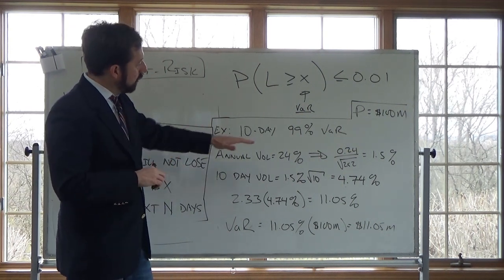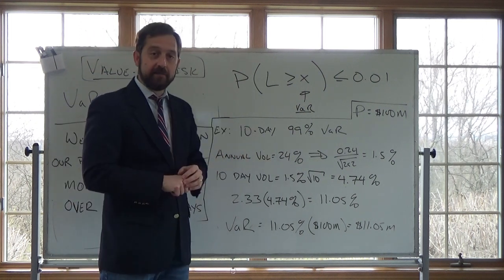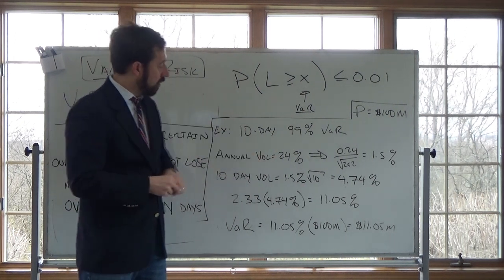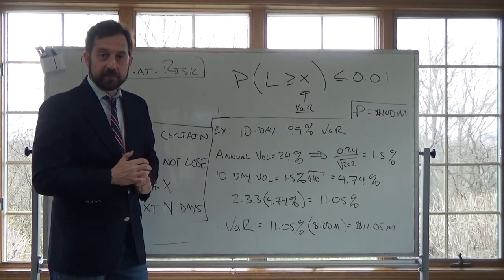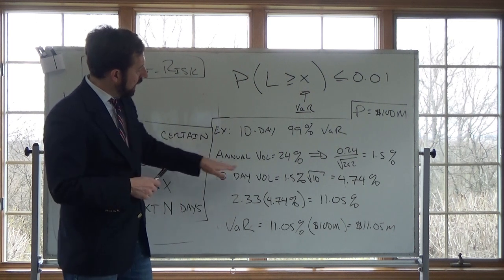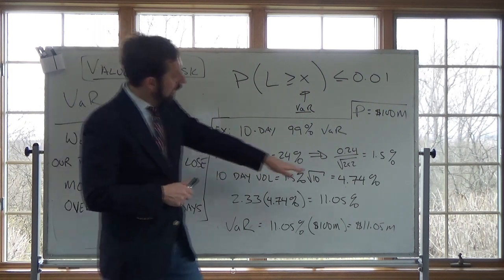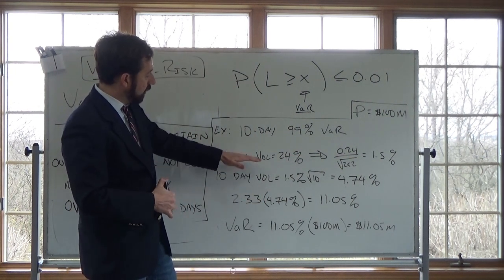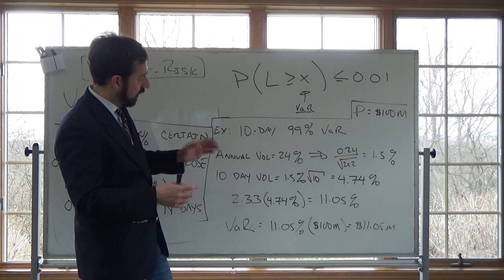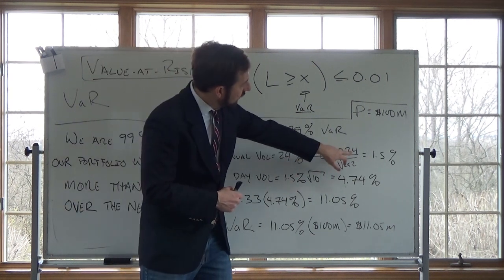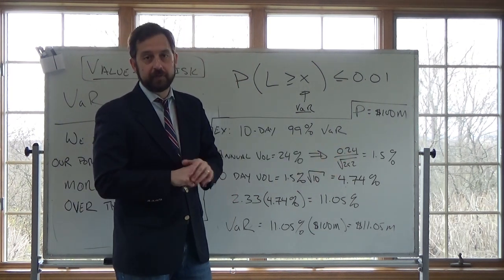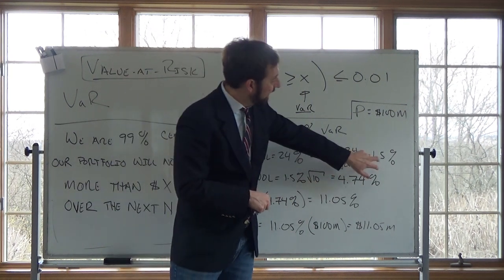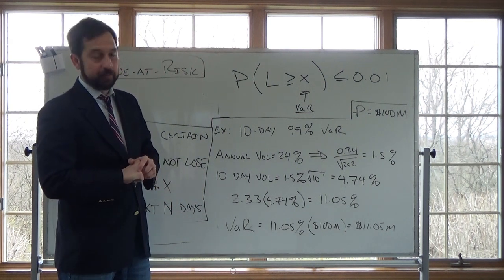What I'm going to do here is calculate 10-day 99% VAR. So to start off, we're given the annualized volatility on our portfolio is 24%. This is the annualized volatility, the standard deviation of returns. Then I can take 0.24 divided by the square root of 252 for 252 trading days of the year. This gives me a daily standard deviation of 1.5%.